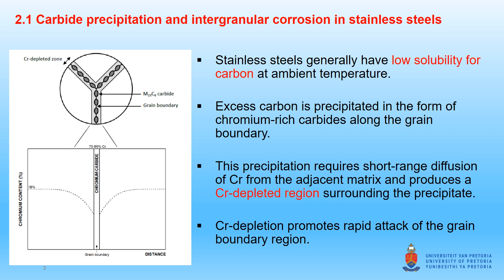At room temperature, the carbon solubility in austenitic stainless steels is approximately 0.006 percent, and it is even lower in ferritic stainless steels. In general, all stainless steels have very low solubility of carbon at ambient temperature. If you have an oversaturated matrix after solution annealing, the excess carbon is precipitated in the form of chromium-rich carbides, predominantly along the grain boundaries.